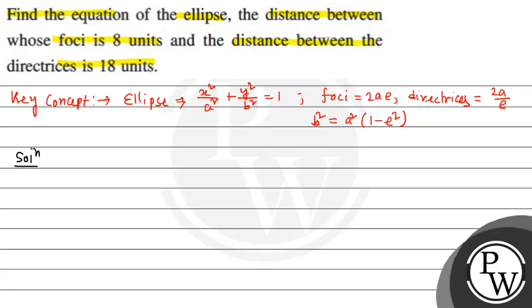Now, 2ae = 8, that's equation 1. And 2a/e = 18, that's equation 2. So multiplying equation 1 with 2: 2ae × 2a/e = 8 × 18.